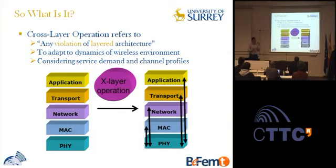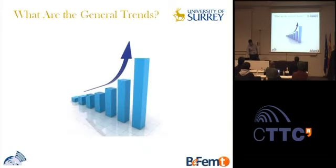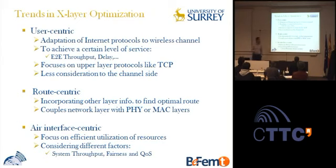Cross-layer optimization, in general, refers to any violation of layered architecture to adapt to the dynamics of the wireless system, considering service demand and channel profiles. Three major categories can be identified: user-centric, route-centric, and air interface-centric. In the user-centric case, the focus is on adaptation of important internet protocols to the wireless channel to achieve end-to-end figures of merit like throughput or delay, with more abstraction for channel modeling.